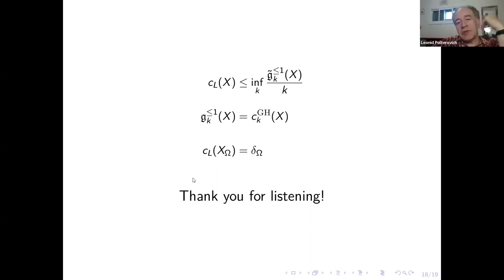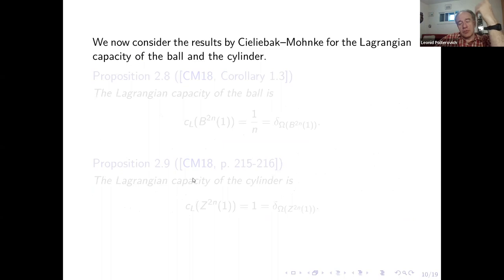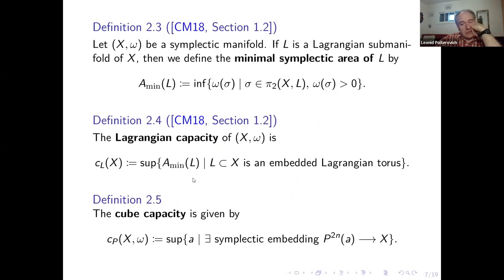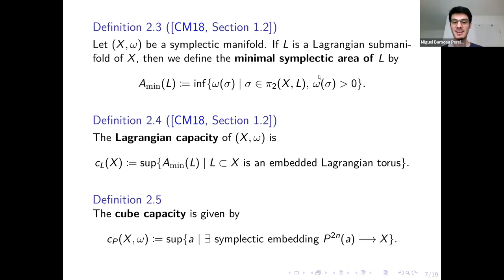What would happen if in the definition of Lagrangian capacity one used other manifolds, not just tori? I'm not sure I have a very good answer to this question, unfortunately. I think it would be different, but I don't think I know this.